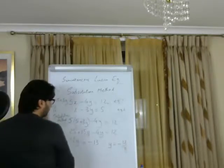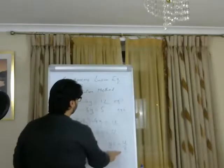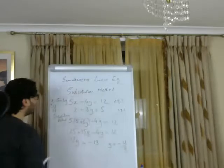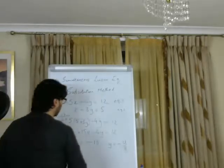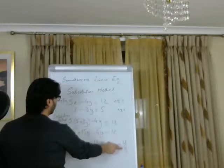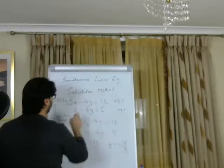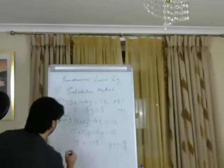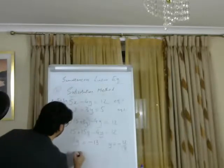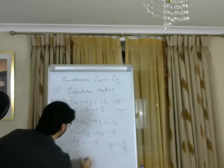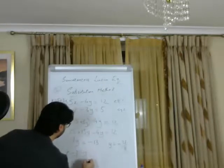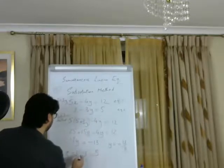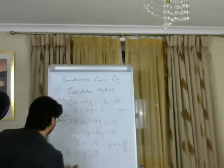Now, because we know the value of y, that gives us the opportunity to find the value of x. Again, pick an equation. We'll substitute the value of y in equation 2. So we bring down the equation to here: x minus 3 times y. We have minus 13 over 11. That equals 5.